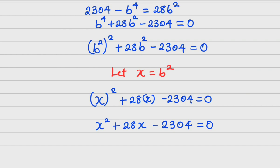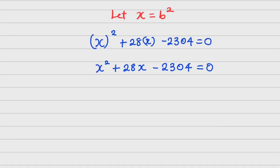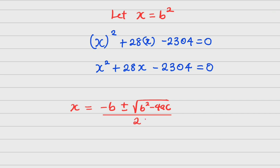One of the simplest things to do is use the quadratic formula: x = (−b ± √(b² − 4ac)) / 2a. This is the quadratic formula, and I need to identify my values of a, b, and c.